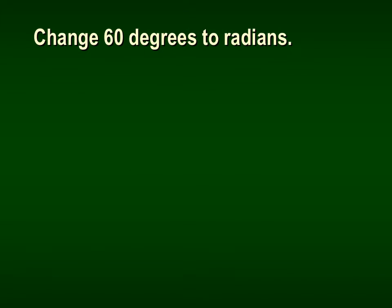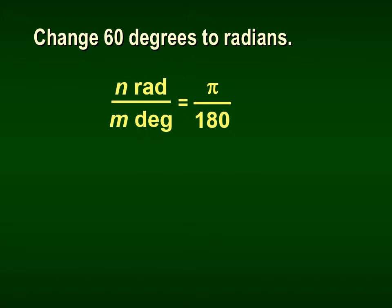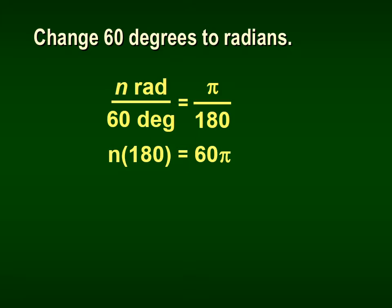Let's change 60 degrees to radians. We put 60 where the degrees go: N over 60 equals π over 180. Cross-multiplying gives 180N equals 60π. Dividing both sides by 180 and simplifying, we get π over 3, which is approximately 1.05. However, we want to leave the exact answer as π over 3.